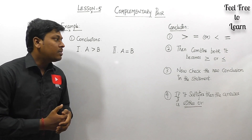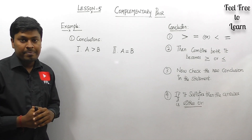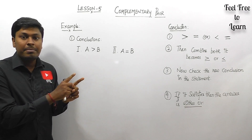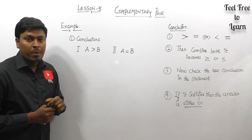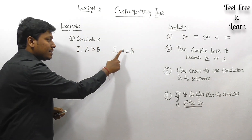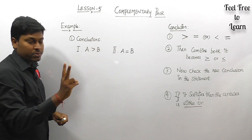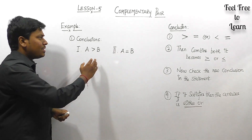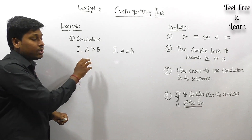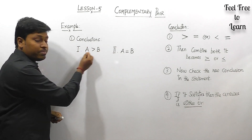Before solving a question based on complementary pair, let me explain the basics. The complementary pair is only based on the conclusion — you need to say whether it is a complementary pair or not. Point number one: one conclusion should be greater than and the other should be equal to, or alternatively less than and equal to. Both letters in the two conclusions must be the same — for example, A-B and A-B.